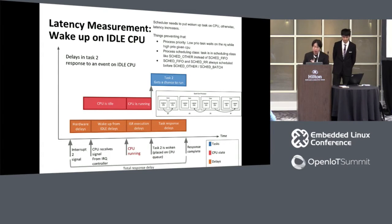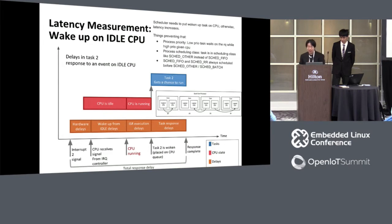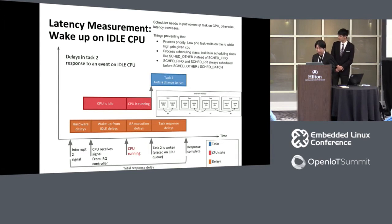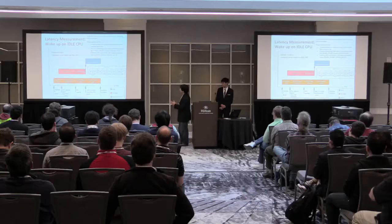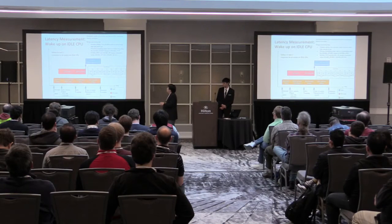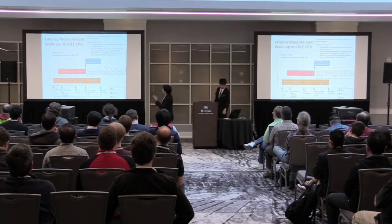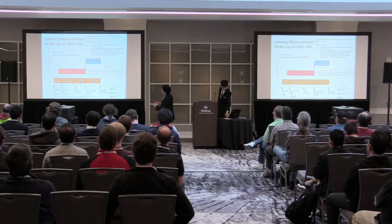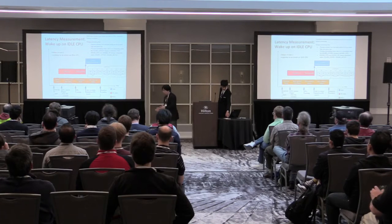To reduce latency in this condition, you can think about the arrangement of process priority: lower priority tasks based on the IRQ while higher priority tasks get the CPU. You can also change the scheduling policy — for example, SCHED_FIFO and round-robin always schedule before SCHED_OTHER or batch.